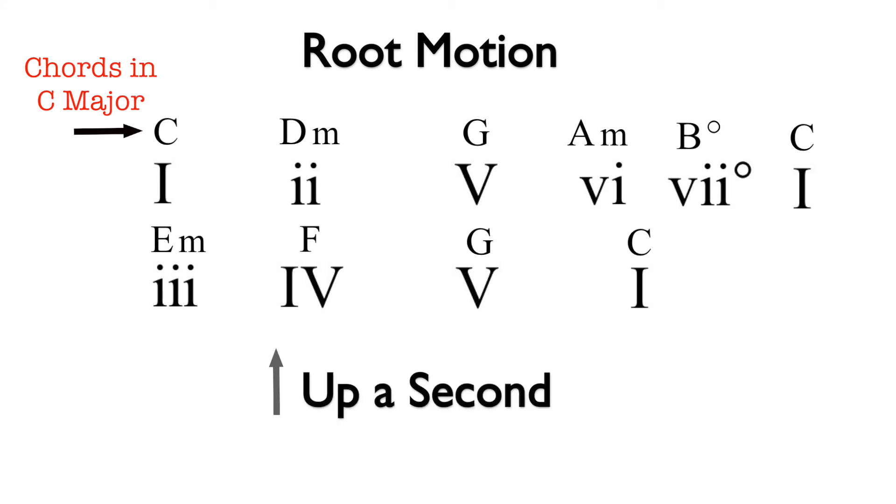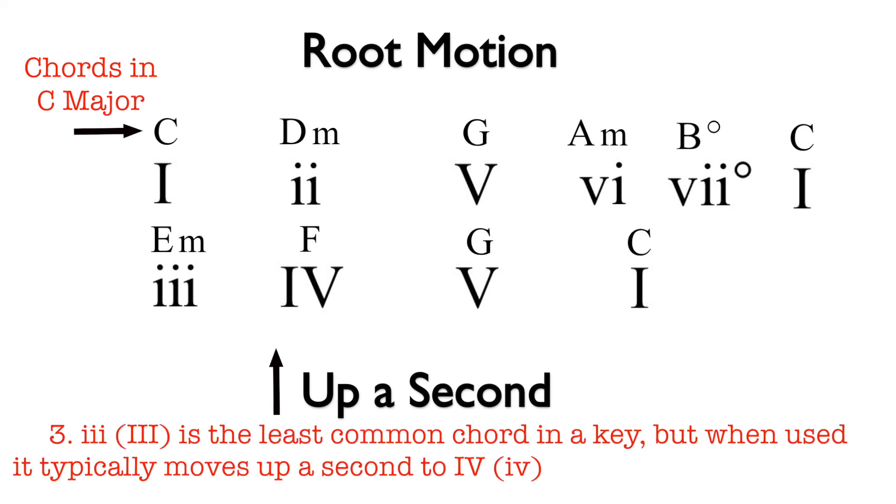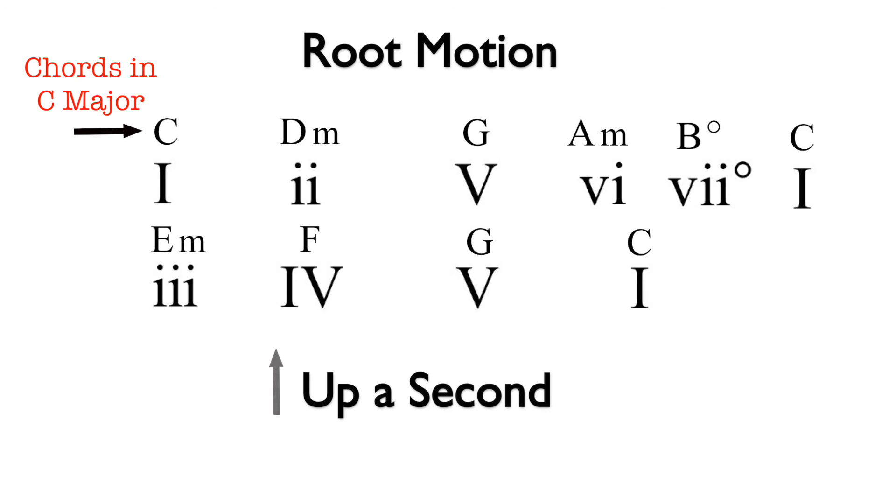Three to four is up a second root motion. In addition, three commonly moves to four. Four to five is up a second root motion, and we end with five to one, which is down a fifth root motion.